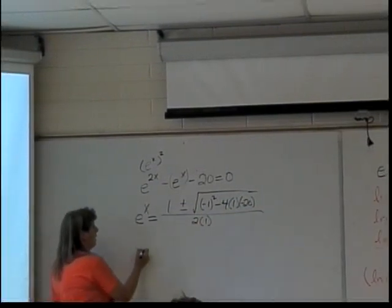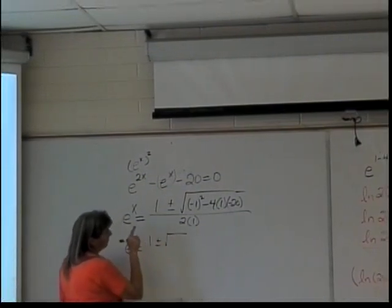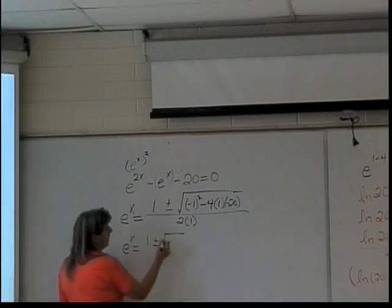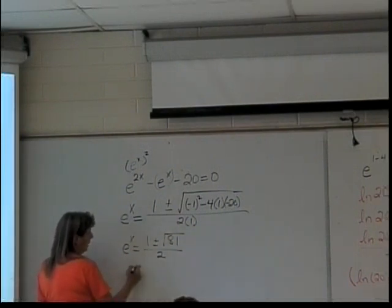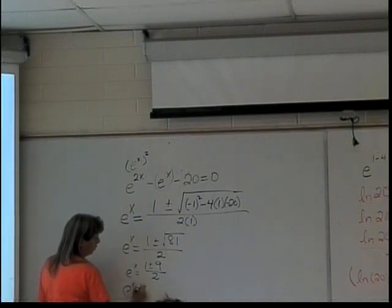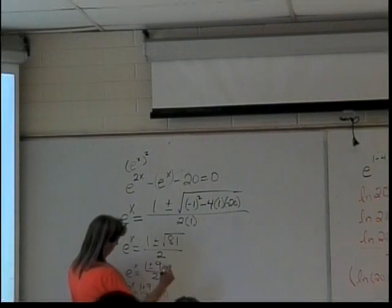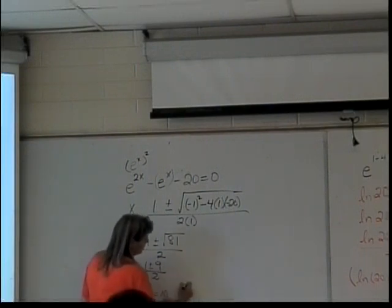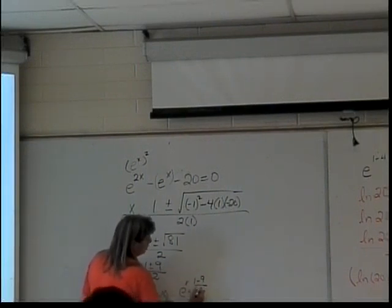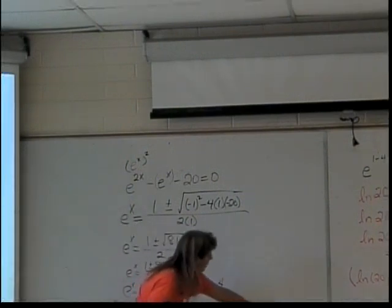So, what will I have? I'll have e to the x equals 1 plus or minus the square root of 81, divided by 2. So, e to the x is equal to 1 plus or minus 9 over 2. Well, that will give me e to the x equals 1 plus 9 over 2, which is 10. Or, e to the x is equal to 1 minus 9 over 2, which is negative 4. And that's not 10, it's 10 divided by 2, it's 5.